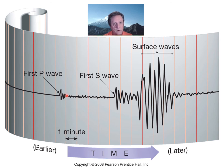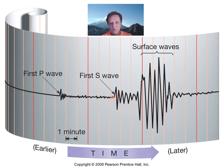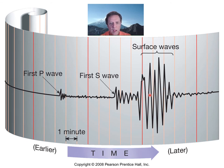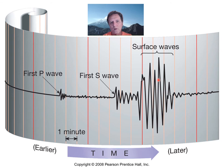P waves are not the highest energy, but they get there first. Then come S waves — shear or secondary waves — which are more energetic but slower, traveling at about 60 percent the speed of a P wave. Then come surface waves, the slowest of the three types, but unfortunately they tend to be the most energetic and have the highest amplitude. Because surface waves have the highest amplitude, the most energy, and are closest to the surface, they are often the most destructive waves you will experience in an earthquake.